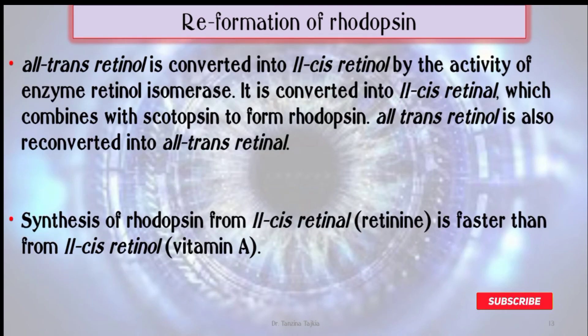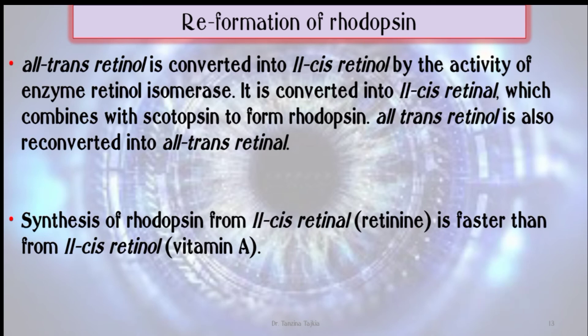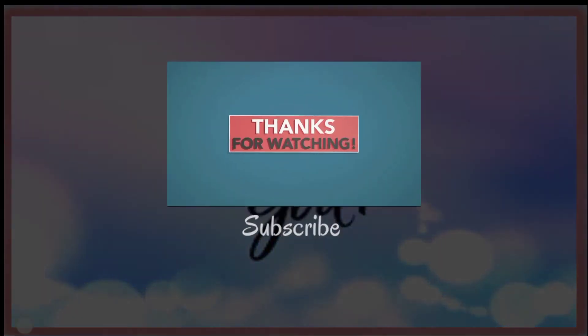All-trans retinol is converted into 11-cis retinol by the activity of the enzyme retinol isomerase, which is then combined with scotopsin to form rhodopsin. All-trans retinol is also reconverted into all-trans retinol. Synthesis of rhodopsin from 11-cis retinol is faster than from 11-cis retinol via the alternative pathway.